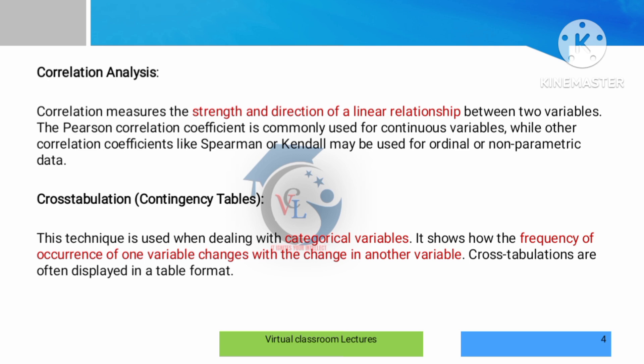Next is cross tabulations or contingency tables. This technique mostly deals with categorical variables. For categorized data, we can use this technique. When one variable changes, the changes in the other variable are represented in a tabulation format — that is cross tabulations or contingency tables.